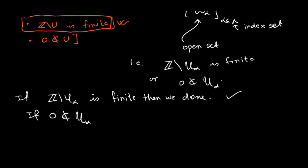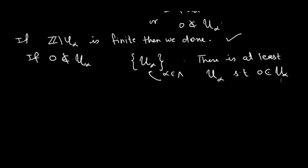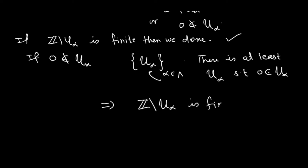Since this is a cover, there is at least one U_alpha such that 0 belongs to U_alpha. If 0 belongs to that U_alpha, it means Z minus U_alpha is finite. Hence, since there are only finitely many remaining points, we can cover them with finitely many open sets. This shows that the topology tau is compact.